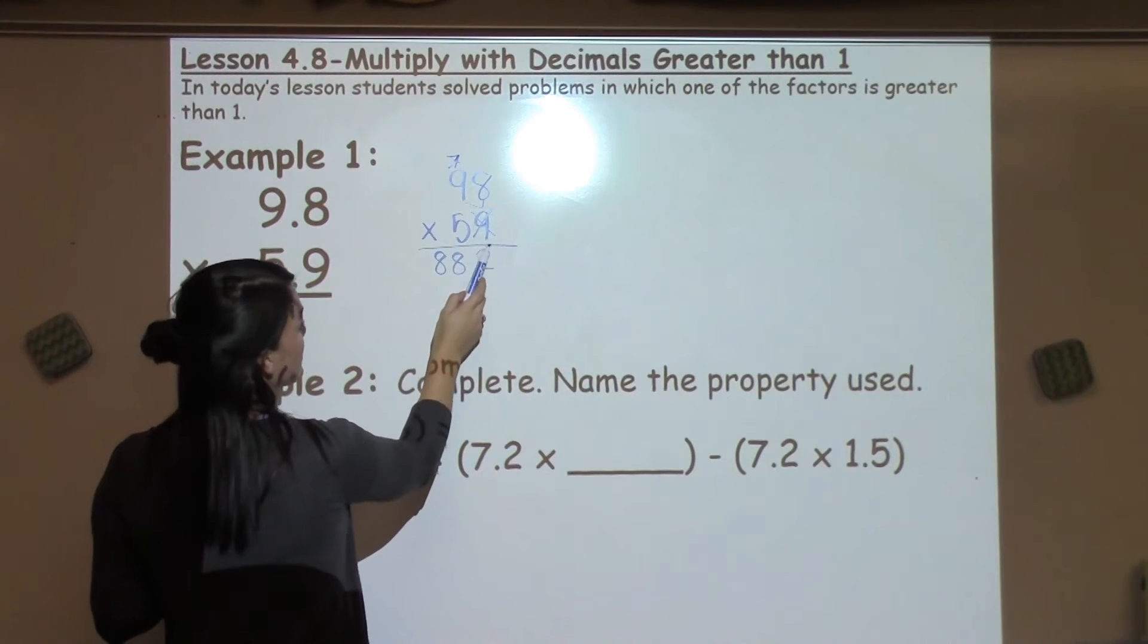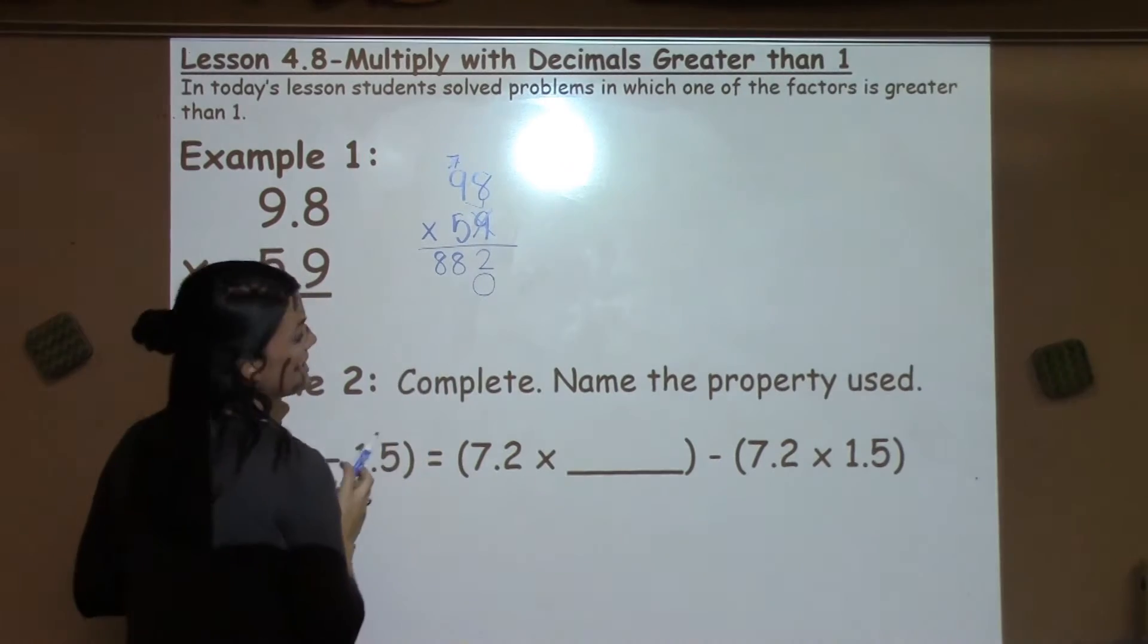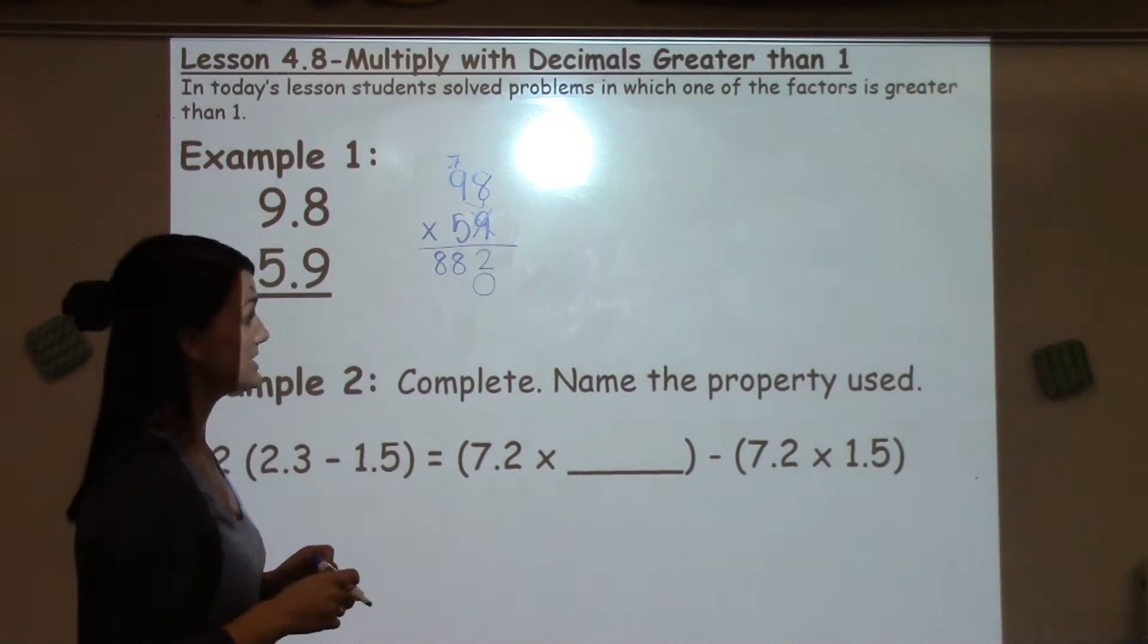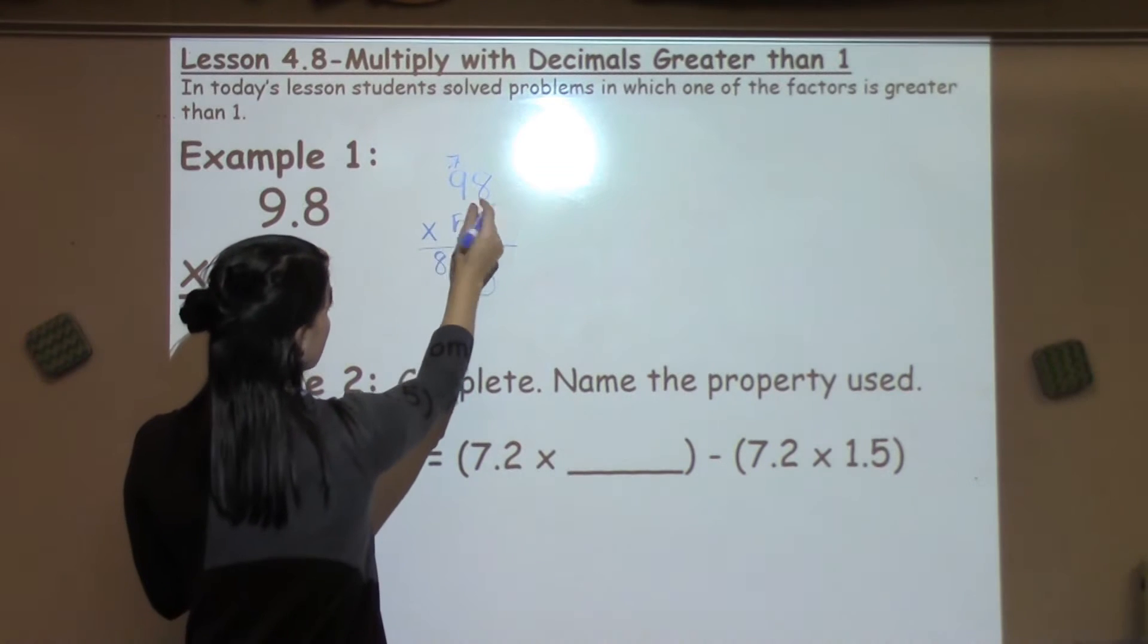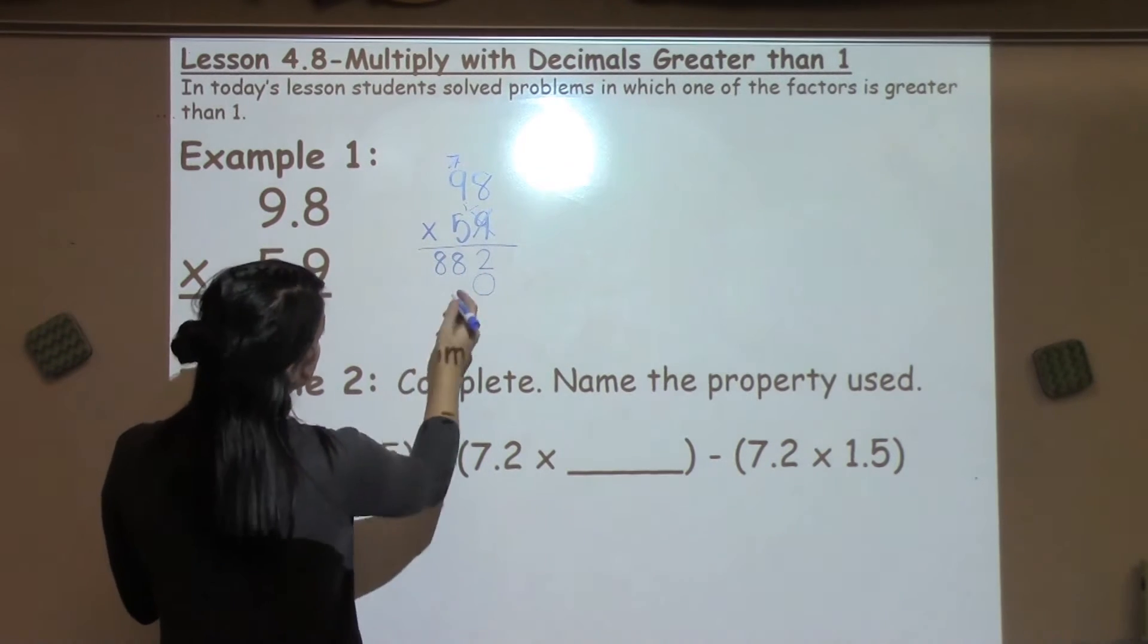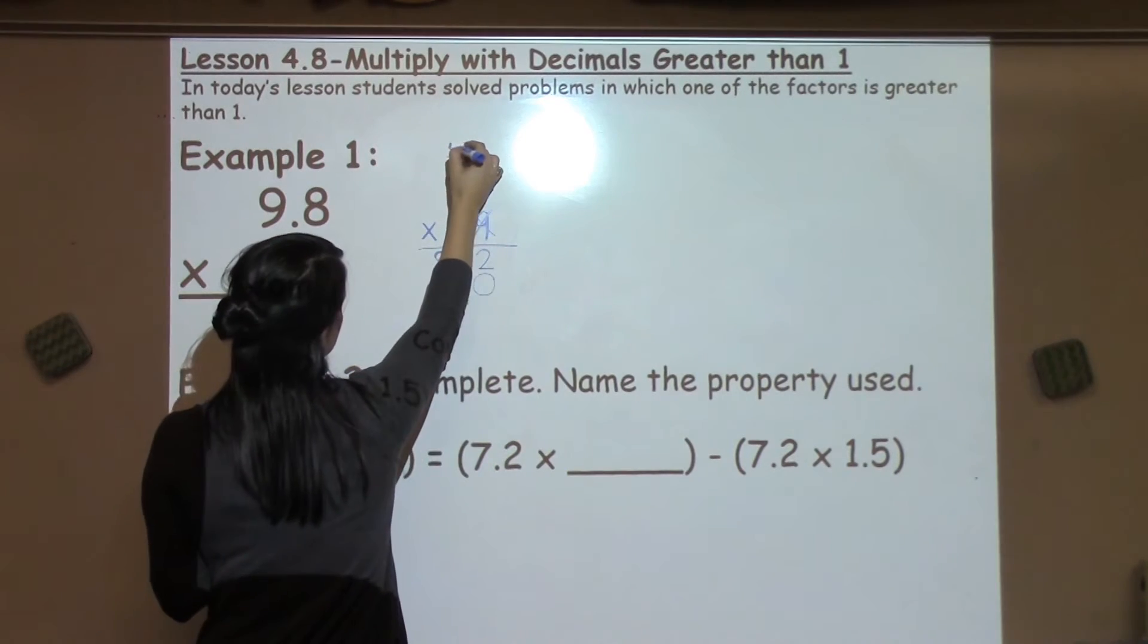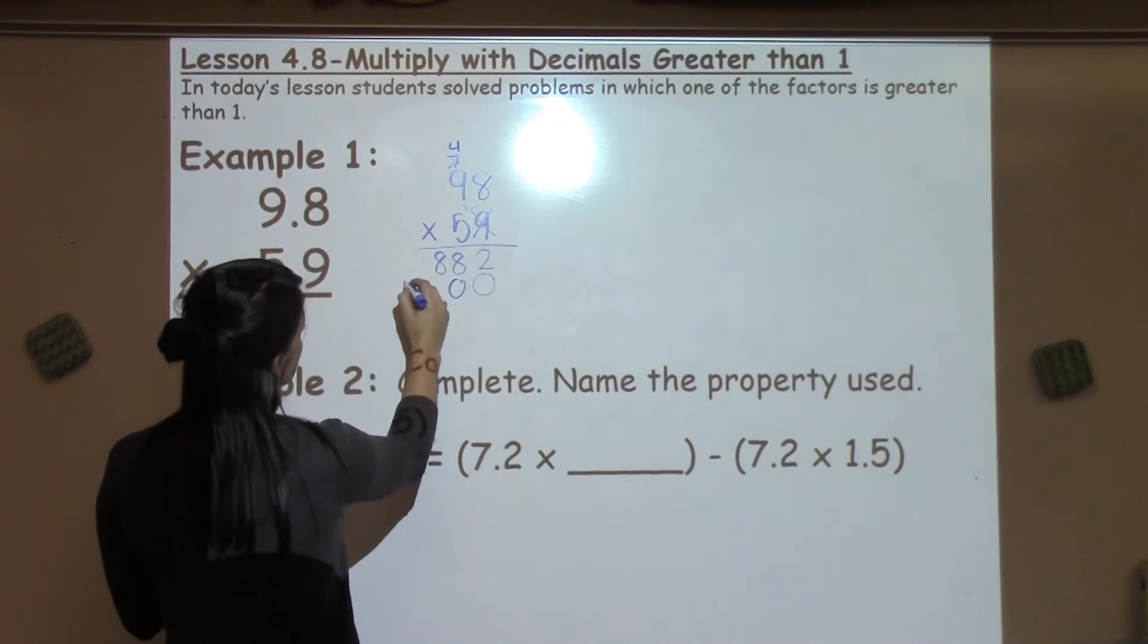The saying that I use is anytime I make an x up above, I make an o down below to help them remember to include that place value and placeholder. Now I'm just working with the 5, distributing it to the 8 and then to the 9. So 5 times 8 is 40, carry the 4. 5 times 9 is 45, plus 4 is 49.